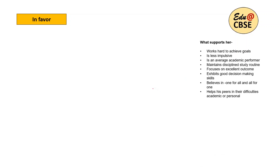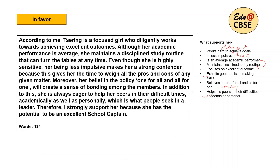Now your three steps are clear and you are ready to write the paragraph. Let's move on — first, the paragraph in favour. I'll keep those points in front of me so I can use them all. Works hard to achieve goals — she is diligent. Is less impulsive — she doesn't make hasty decisions. Average academic performer — but her routine goes in her favour. Good decision-making and believing in one for all will help bond the members. So now here is the passage: 'According to me, Sering is a focused girl who diligently works towards achieving excellent outcomes.'